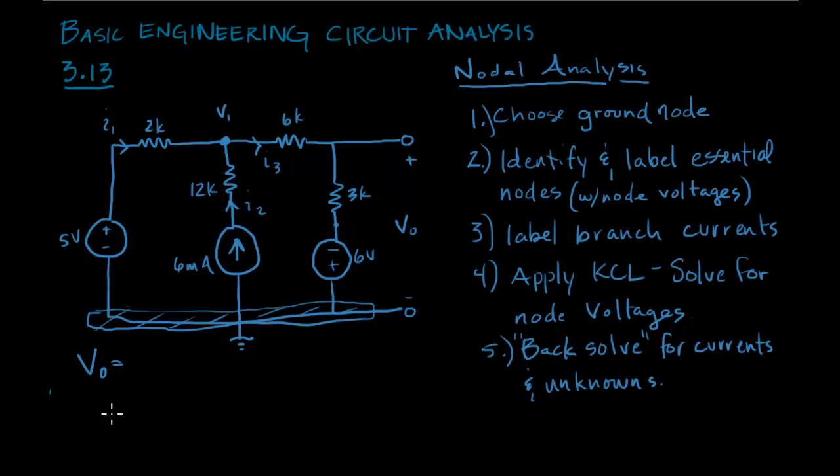And now we can just apply KCL. So KCL in this case is going to look like this: I1, we'll call the going into the node positive, plus I2 minus I3 equals zero.